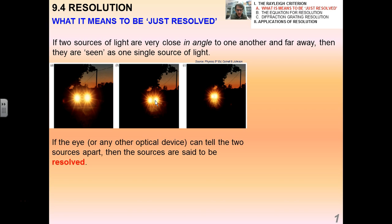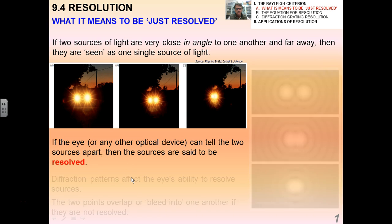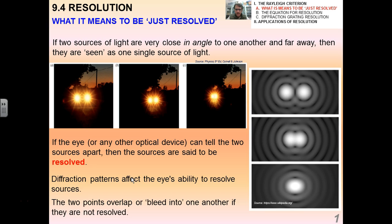Now if the eye or any other optical device such as a camera or a telescope can tell the two sources apart, we say that these are now resolved. The reason why we don't see them resolved as two images initially when they're far away is because of diffraction patterns.